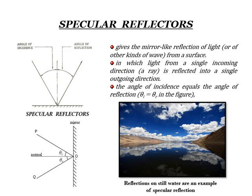Specular reflection gives a mirror-like reflection of light from a surface, in which light from a single incoming direction is reflected into a single outgoing direction. The angle of incidence equals the angle of reflection. Whatever energy hits the surface is reflected back in the same direction. The best examples of specular reflectors are mirrors and water bodies.